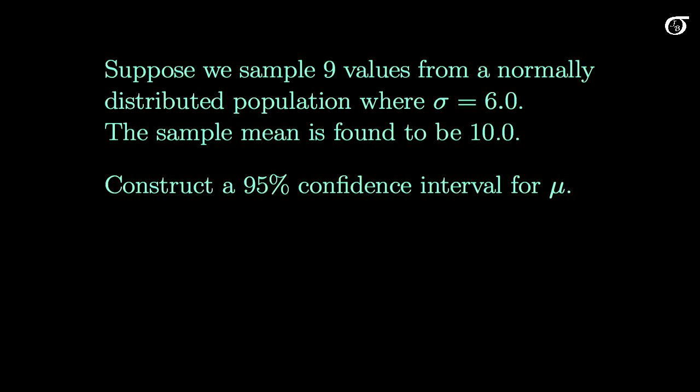If we look at a specific example, suppose we sample 9 values from a normally distributed population where σ is 6.0, and we find a sample mean of 10.0. We want a 95% confidence interval for μ. This is going to be 10.0 ± 1.96 times 6.0 over the square root of 9. If we work this out, this is going to be 10.0 ± 3.92. So our 95% margin of error is 3.92. We are 95% confident that our sample mean of 10 is within 3.92 of the true population mean.